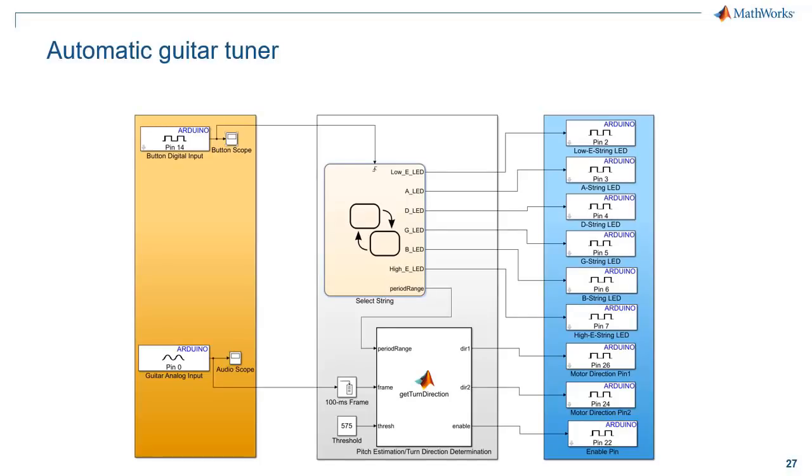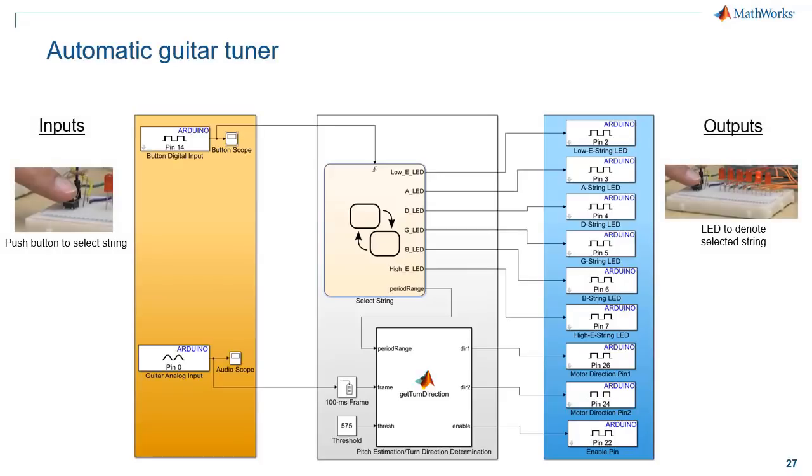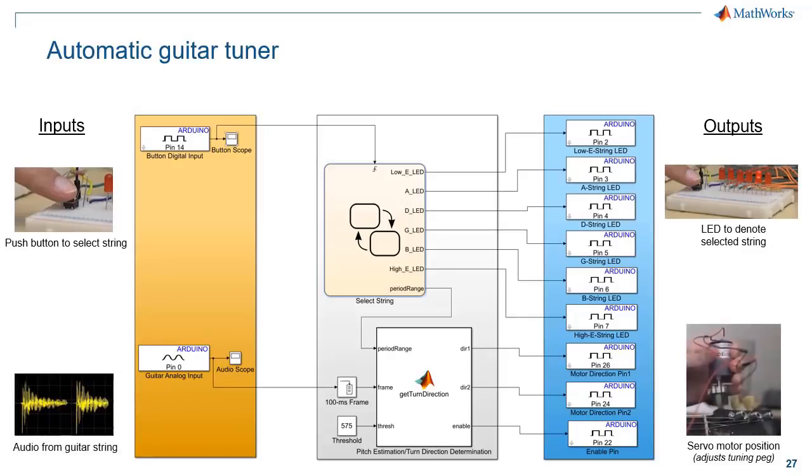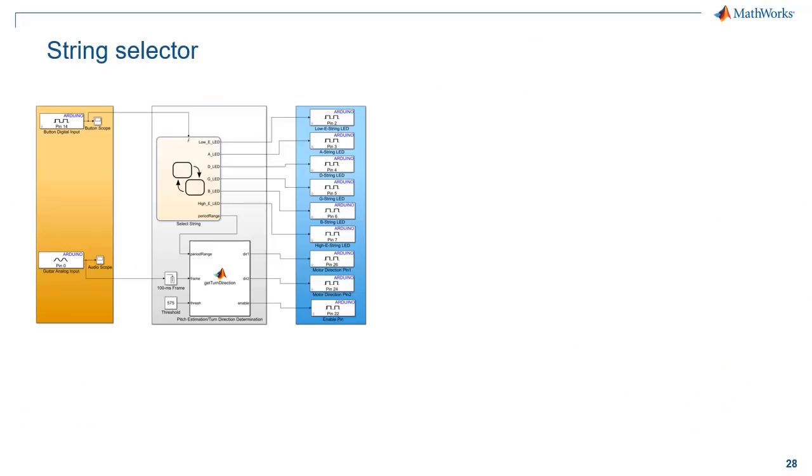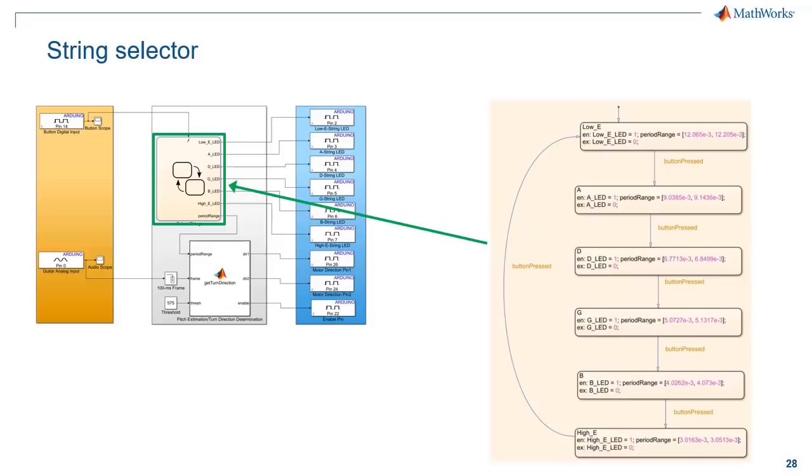So Ben did a nice job introducing the problem. Let's take a look at how this is actually working under the hood. So here's the underlying Simulink model and on the left hand side are the inputs and on the right hand side are the outputs. So the first input is the push button used to select the string. So this goes through a state flow chart and lights up the appropriate LED. And the second input is the audio input signal from the guitar string. So this is going to go through a MATLAB function that compares the actual signal to a reference signal and turns the servo motor accordingly. So that at a high level is how this thing is operating.